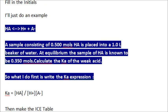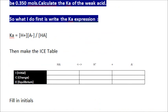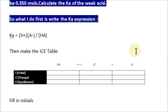Here's an example: HA double arrow H-plus plus A-minus. A sample consisting of 0.50 moles of HA was placed into a 1-liter beaker of water. At equilibrium, the sample of HA is known to be 0.350 moles. Calculate the Ka of the weak acid. So the Ka expression is: Ka equals [H-plus] times [A-minus] over [HA]. Now set up the ICE table — write the balanced chemical equation, and for each compound in the equation, give it its own column. So HA, H-plus, and A-minus each get their own column. And left to right, you have three rows: Initial, Change, and Equilibrium.